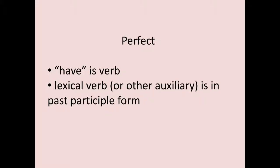Let's do perfect first. Your choices for perfect are yes or no — non-perfect is the default. The auxiliary verb for perfect is always 'have,' and the lexical verb is in the past participle form. You identify perfect not by its meaning but by its form: if the auxiliary verb is 'have,' carrying the tense and subject-verb agreement, and the lexical verb is in the past participle form, the clause is perfect.